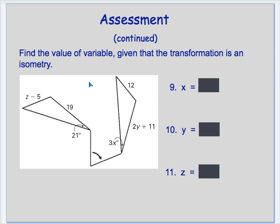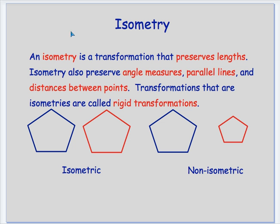And then on this one, let's see if you can figure it out. We haven't done anything with this. Just going to throw it out there for you. Find the value of the variable, given that the transformation is an isometry. You'll probably ask yourself, 'Mr. Boyle, what in the world is an isometry?' And it's a great question.